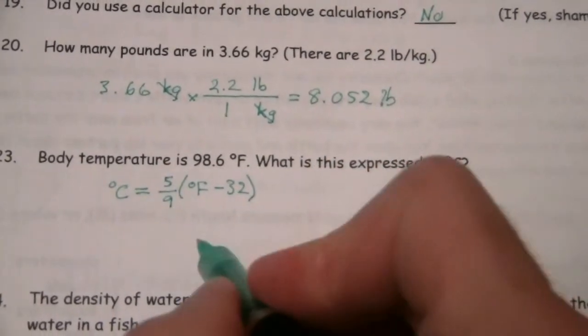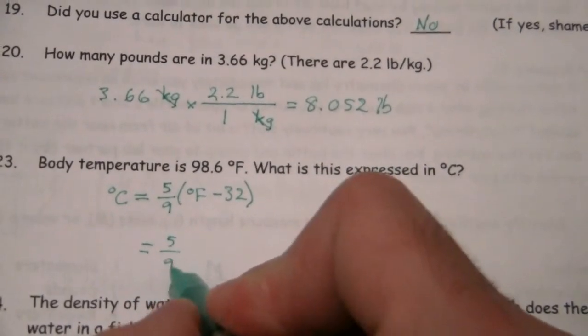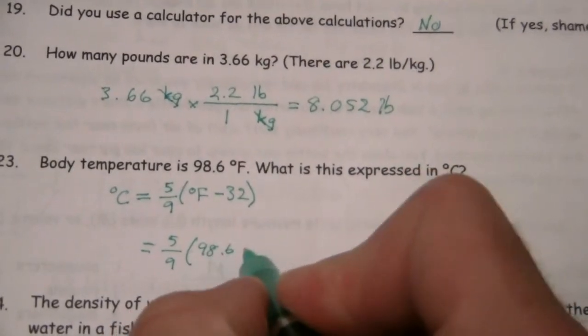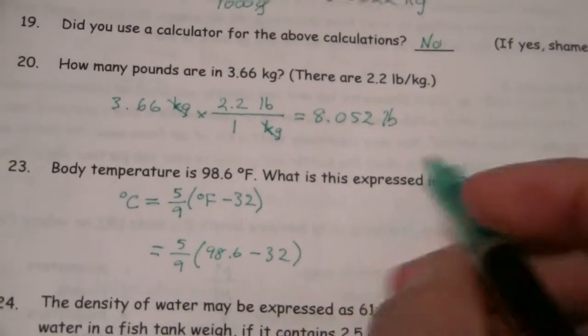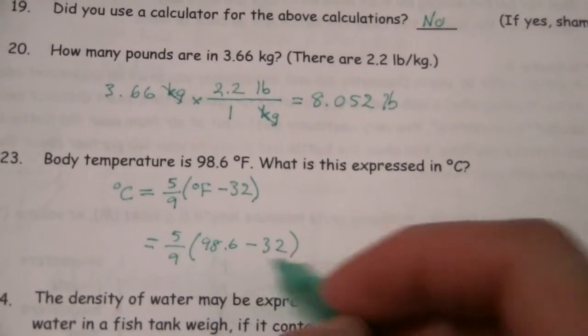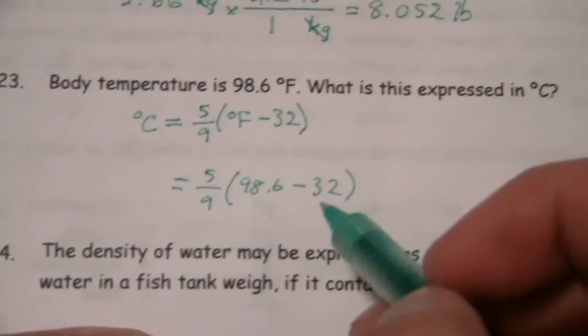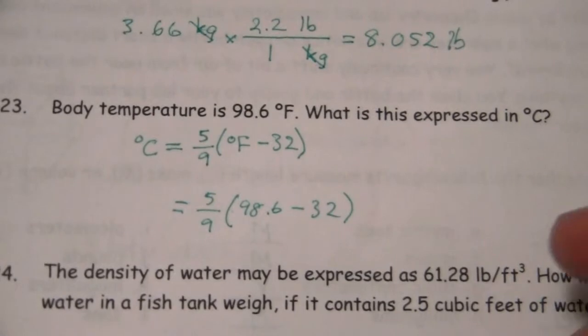we just plug in our 98.6 and I end up with 5 over 9 times 98.6 minus 32. And if I do this subtraction, I'll have 66.6.